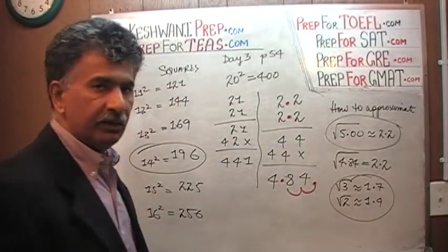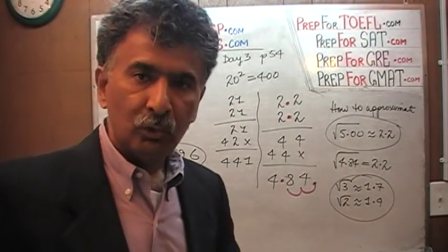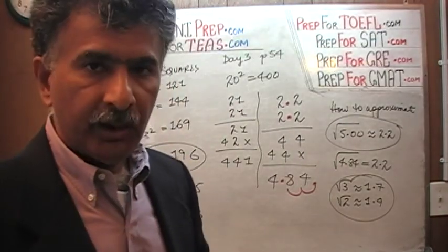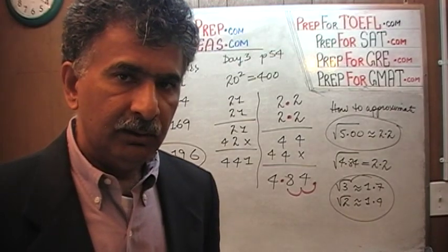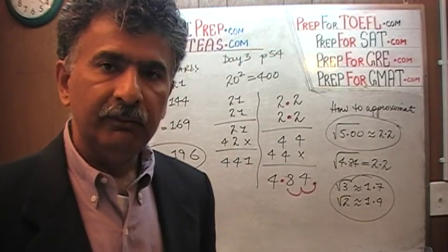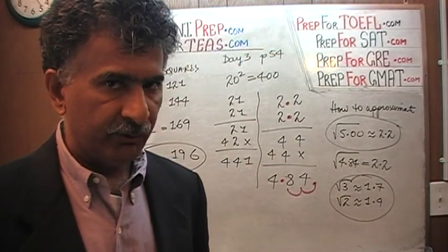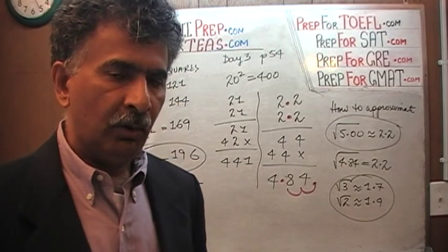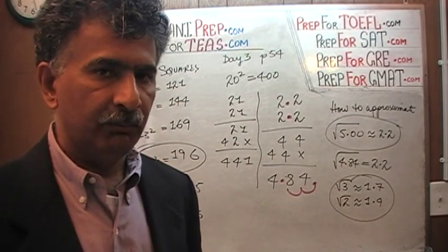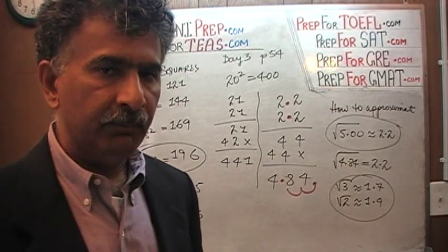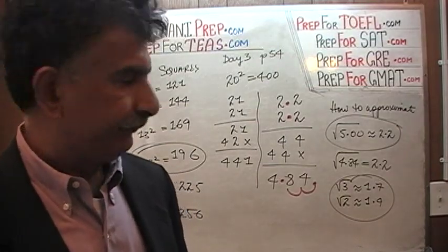So to summarize: square root of 5 is approximately 2.2, square root of 3 is approximately 1.7, and square root of 2 is approximately 1.4. Knowing these three quantities comes in quite handy. We cannot fully appreciate their value at this point, but as we go further in the book and tackle more complicated problems, you will see that they do come in handy.